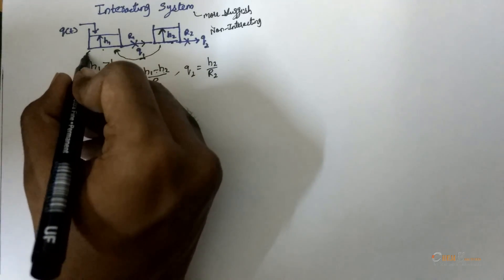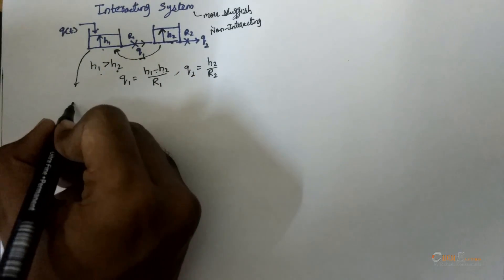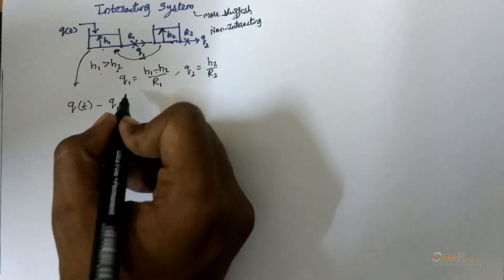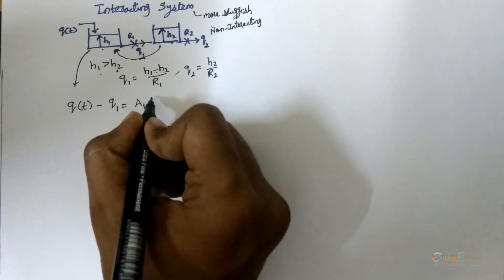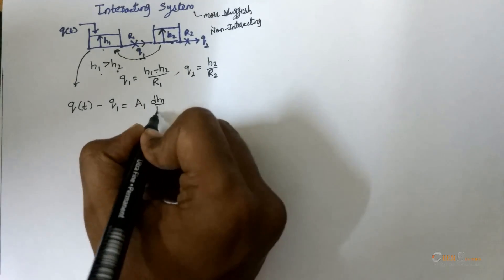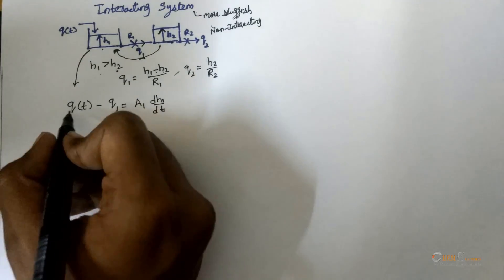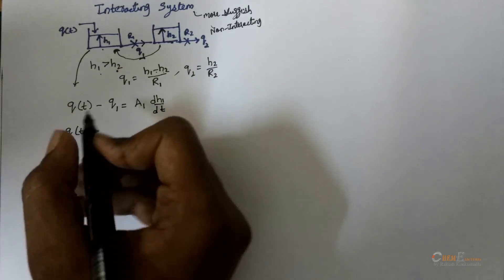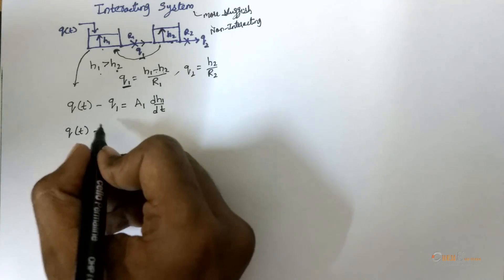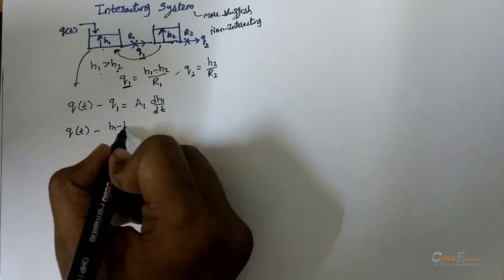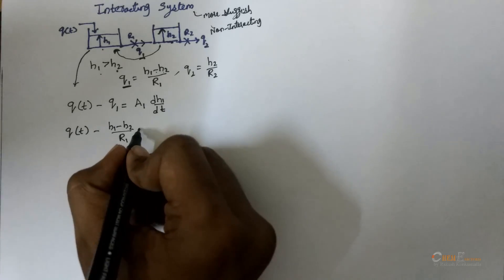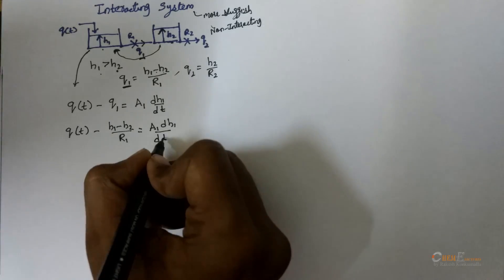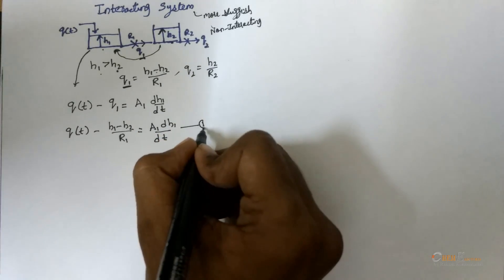Let us consider the mass balance for the first tank. The inlet flow rate Q(t) minus Q1 is equal to the accumulation A1 · dH1/dt. This is equation 1.